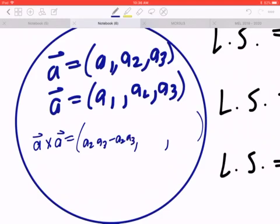Likewise, if I look at the last component, that's going to be a1 a2 minus a2 a1. And if I look at the middle component, this equals a3 a1 minus a1 a3.